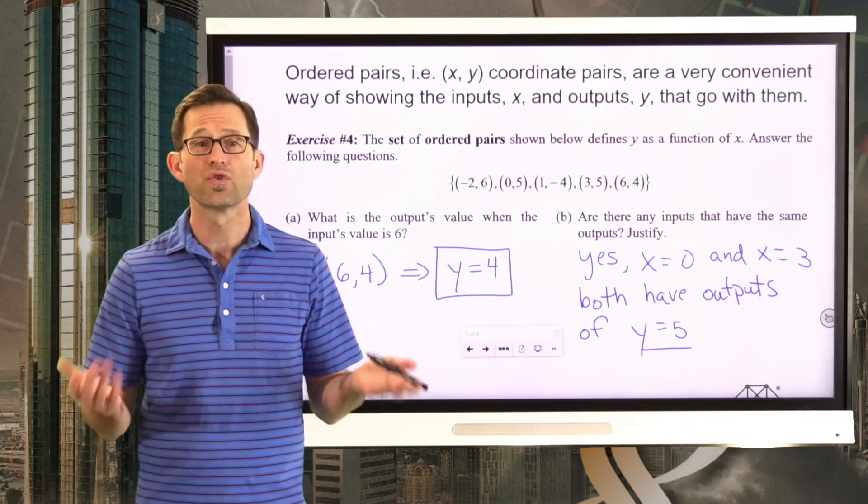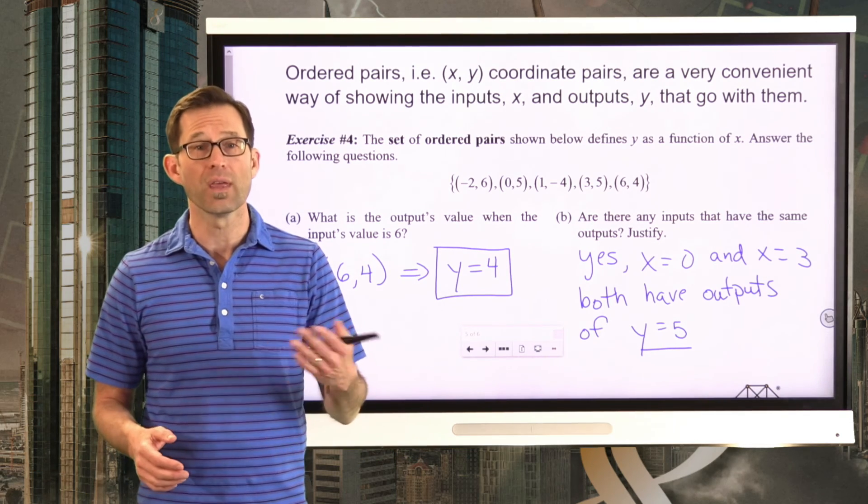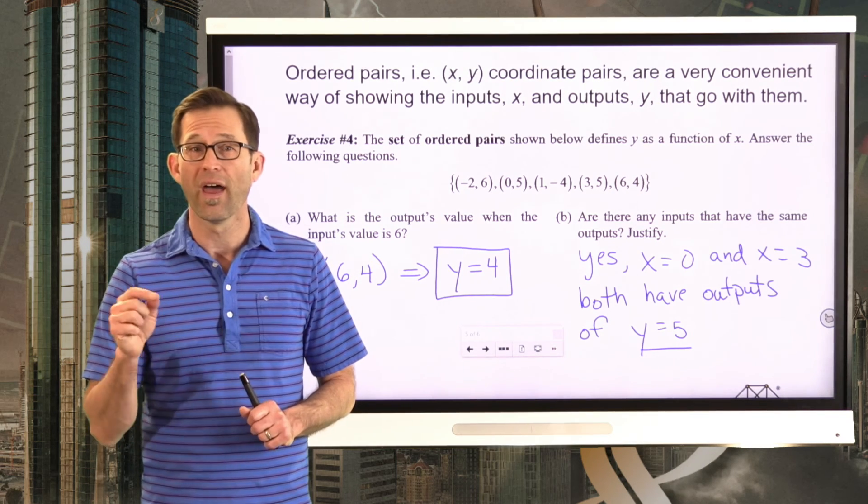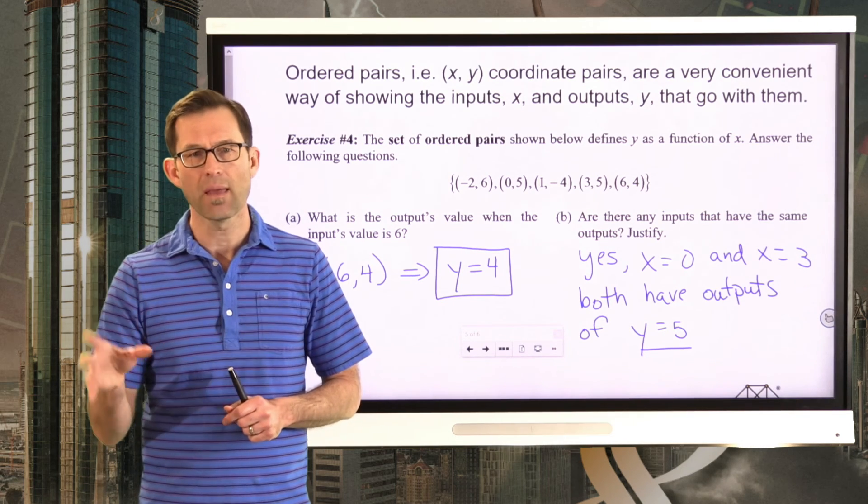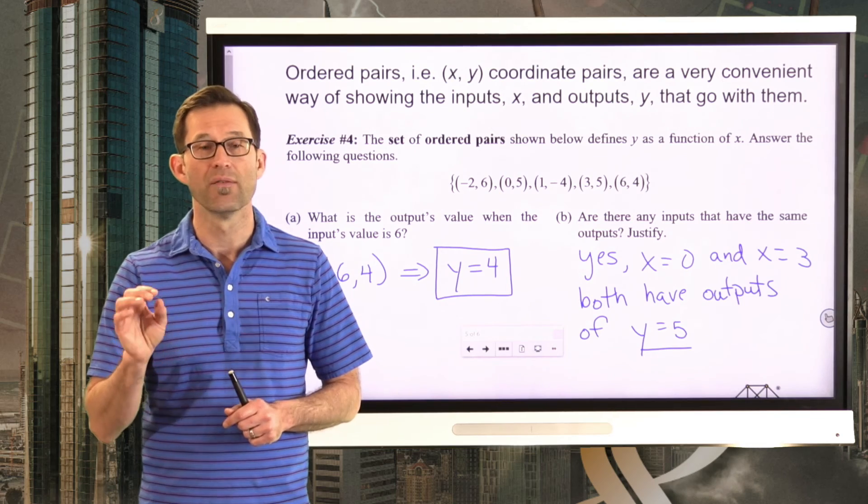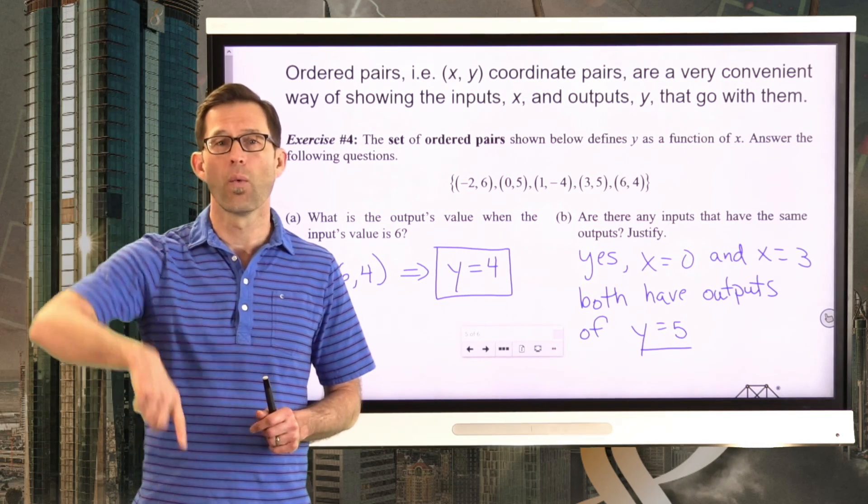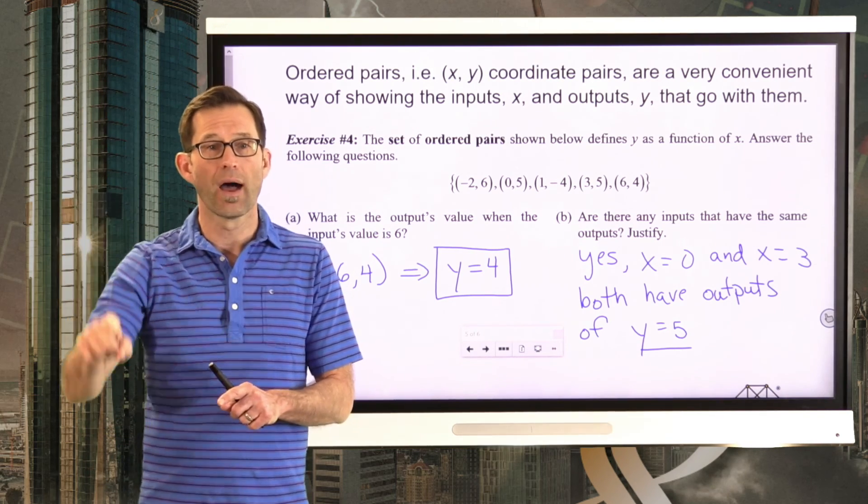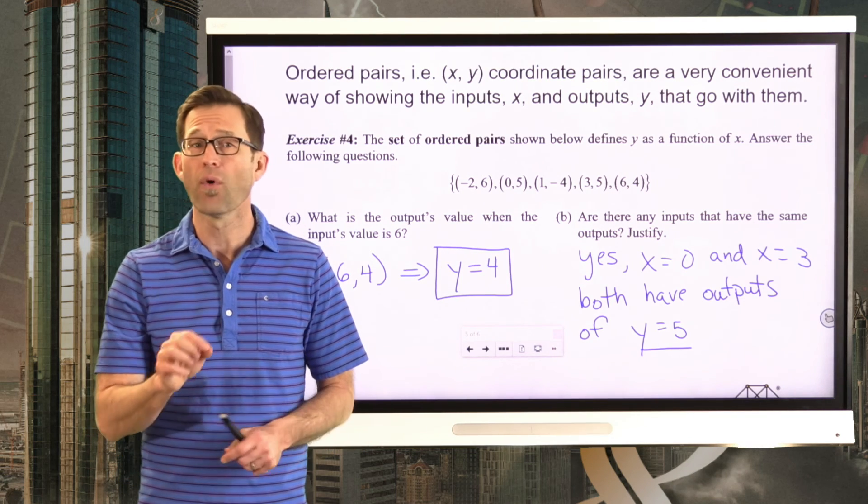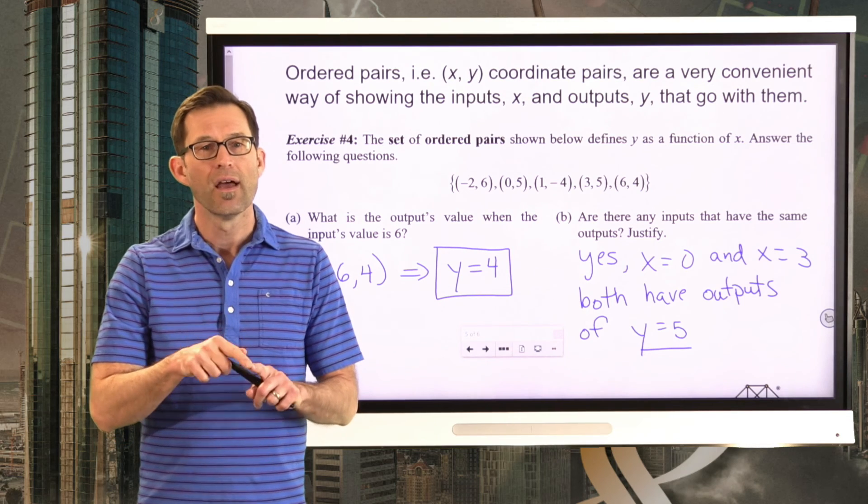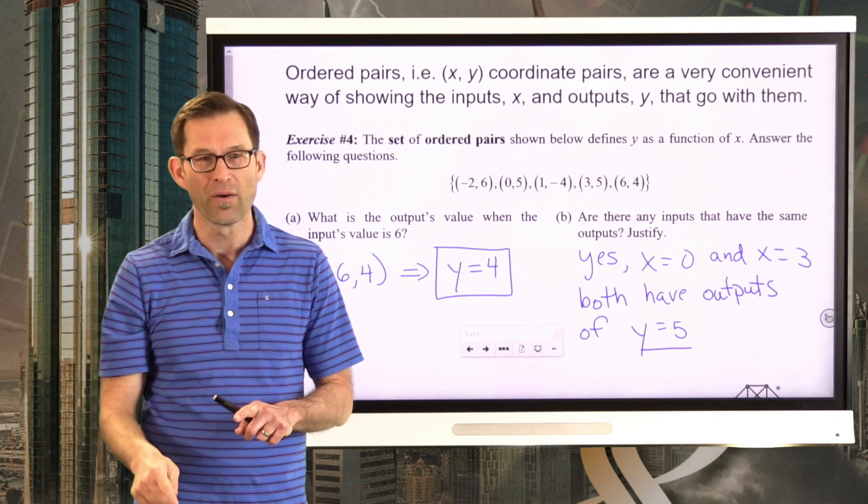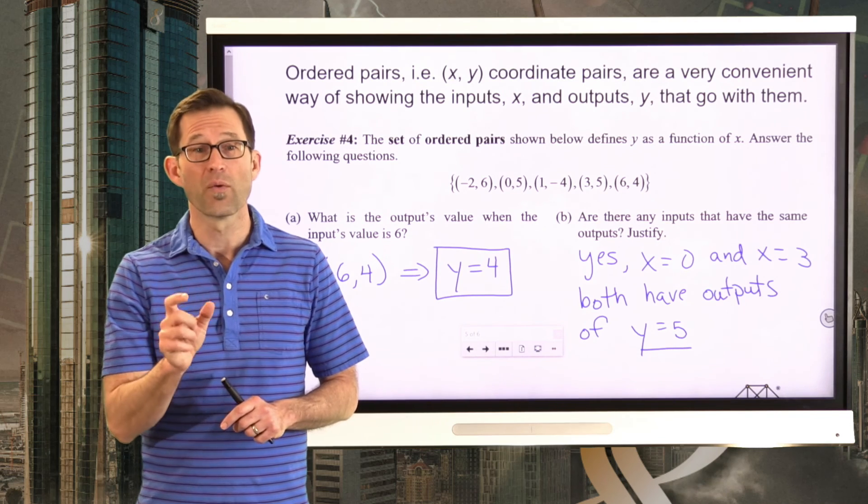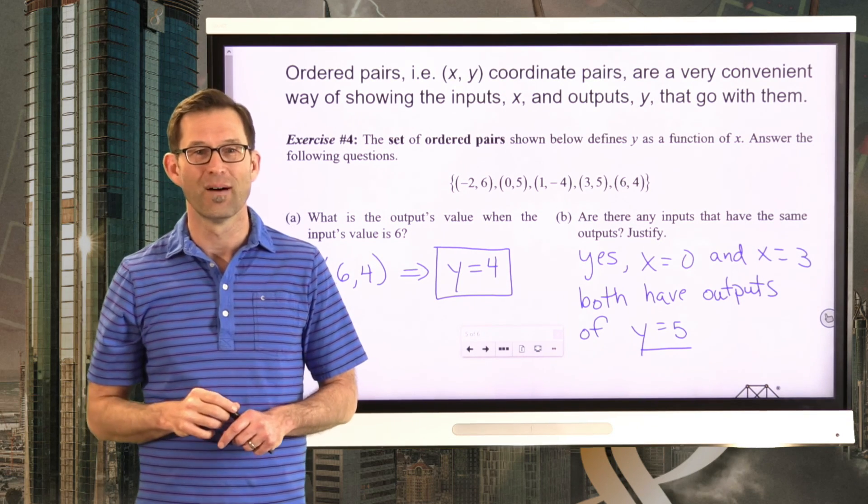And again, we really want to harp on this idea because a function is a little bit weird. It always has two variables involved, two quantities involved, one of them being the input quantity, one of them being the output quantity. For any given input, there is only one output. But you could certainly have the same output for multiple values of the input. A great example is if I tossed a ball up into the air and it went up and then it came back down, and I was recording the height versus the time that the ball has been in the air. Well, every time would have only one height associated with it. But yet, for every height that you hit on the way up, you're also going to hit on the way down. Anyway, let's wrap this up.